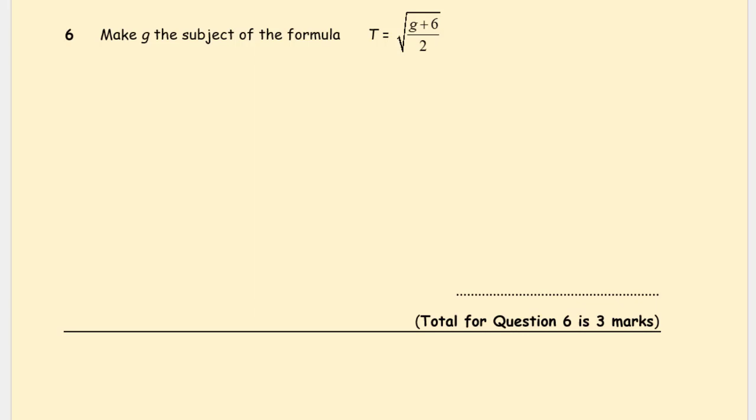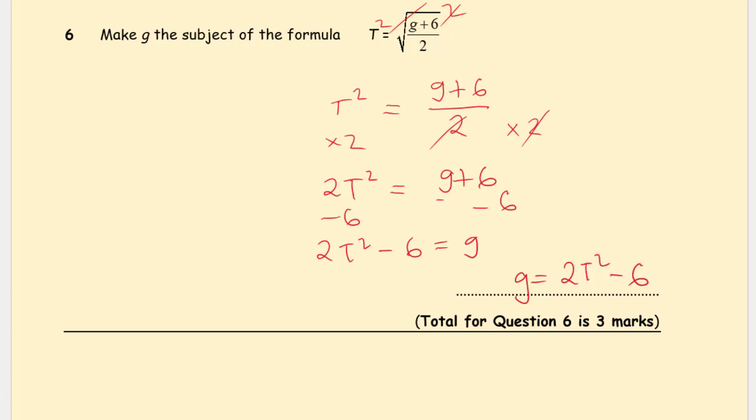Question 6: We have a square root. T = √((g+6)/2), make g the subject. The opposite of square rooting is squaring, so we're going to square both sides. t squared equals (g plus 6) over 2, as square root and squaring are inverse operations. Get rid of the 2 by multiplying both sides by 2. 2t squared equals g plus 6. Then we need to get rid of the 6 by subtracting 6 from both sides. 2t squared minus 6 equals g. So g equals 2t squared minus 6. This is worth 3 marks.